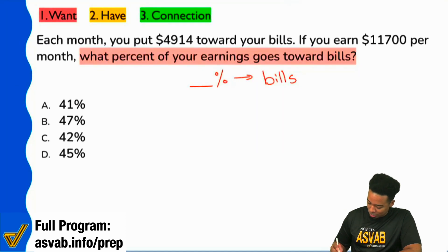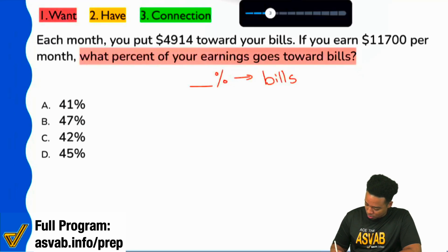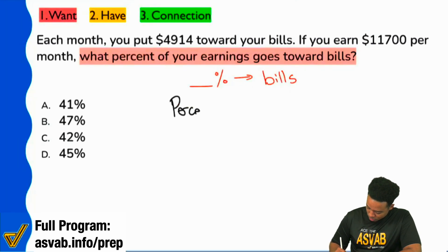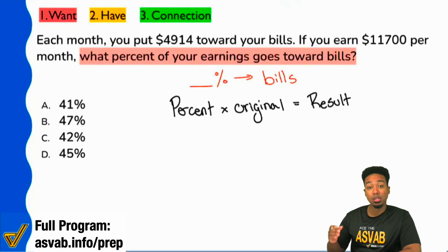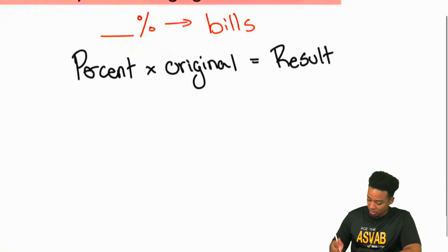So let's go ahead and get that formula in right here. Let me get this just a little bigger. So here's your formula: your percent multiplied by your original amount is your result. And here's a very big piece of information for when you are tackling this formula.